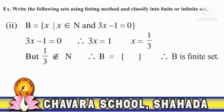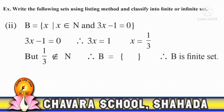Second: P is the set of all x such that x belongs to natural numbers and 3x − 1 = 0. Solving: 3x = 1, so x = 1/3. But 1/3 does not belong to natural numbers. Therefore P is an empty set, and therefore P is a finite set, since all empty sets are finite sets.